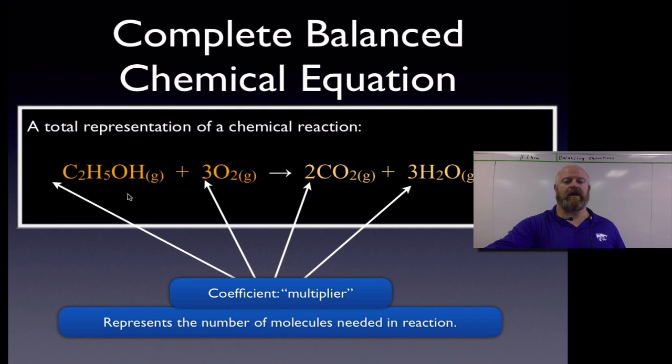So if we look now, we have two carbons, and then we have a multiplier two in front of our CO2, so it also has two carbons in it. If we look at our hydrogens, we have five hydrogens here. We have an additional hydrogen here, so there's six total on this side. And we have H2 on this side, and three is our multiplier, so three times two. We have six hydrogens on this side.